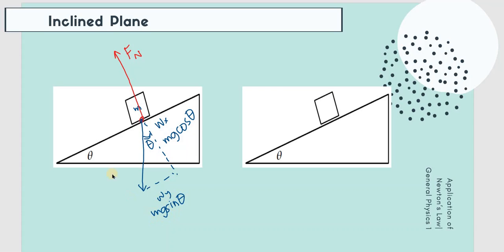We will move the components here so that they are attached to the origin, meaning the forces share a common point. So we move mg sine of theta here. Same in value. Basically, this is the free body diagram of the inclined plane.